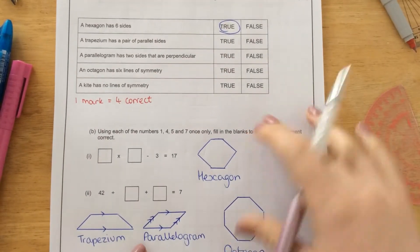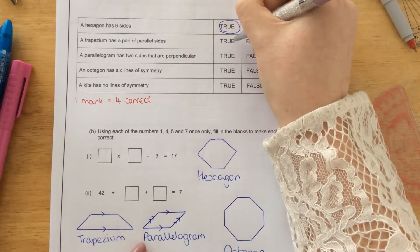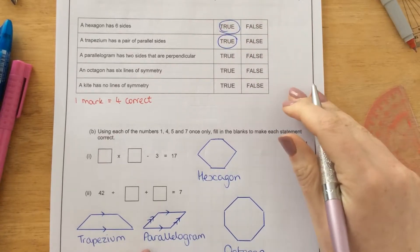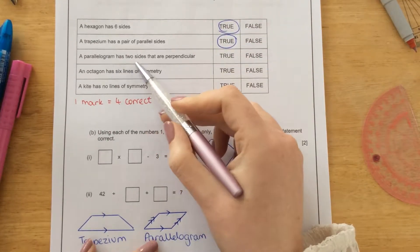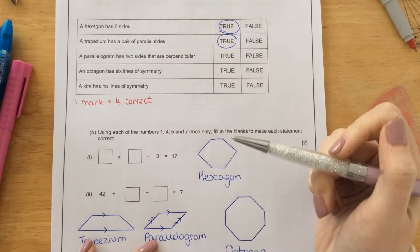So it is true that a trapezium has one pair of parallel lines. A parallelogram has two sides that are perpendicular.